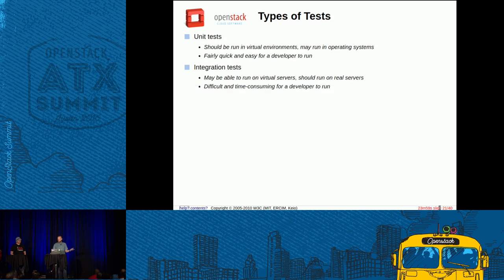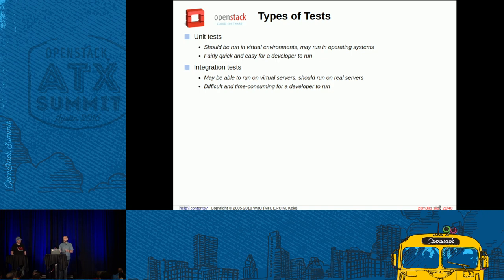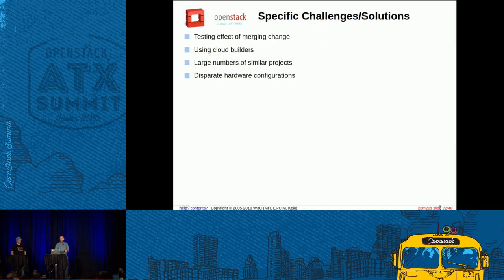The two types of tests we rely on are unit tests and integration tests. The unit tests are what I was talking about earlier — using tox — that you can run in a virtual environment, and you probably should be running them before you submit your patch for review rather than making the gate give you that feedback. The integration tests get much more complicated — sometimes touching third-party CI or lots of other really complicated bits — testing your patch in one project against all of the other interrelated projects that it touches. The intention here is to test the effect of merging that change.